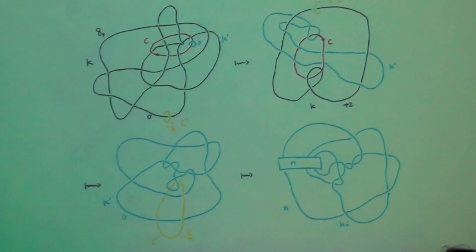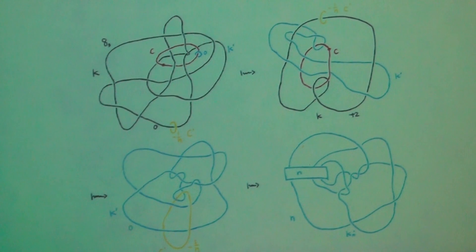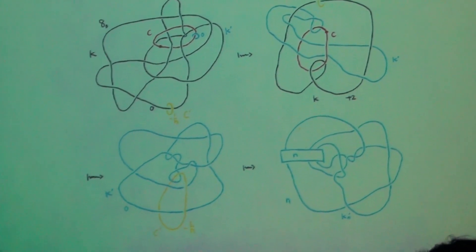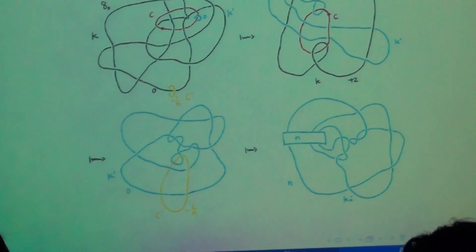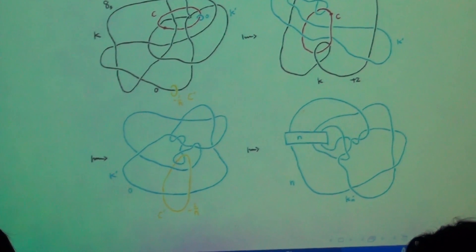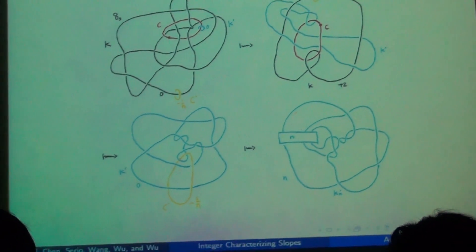Afterwards, C is going to be a zero-framed meridian to K, so we can remove both of them. Then we're just left with blue and yellow, and as I said, C prime is an unknot linked with K prime. Lastly, we can do a Rolfsen twist, and that changes the framing on K_n prime to n, and we finally get the knot that we wanted with the same n surgery.